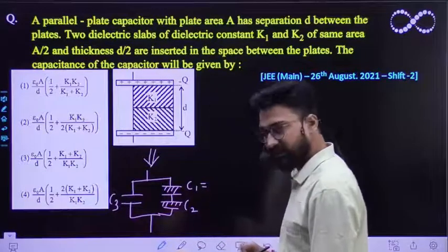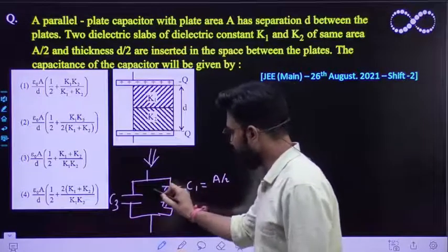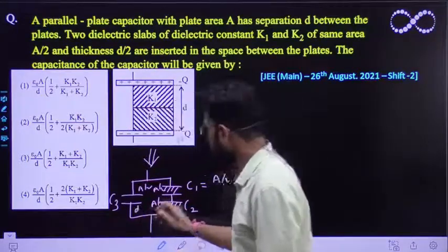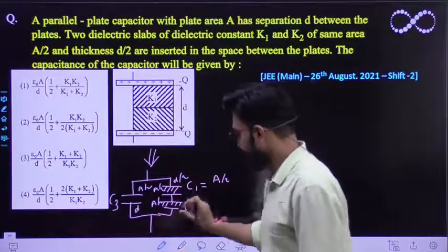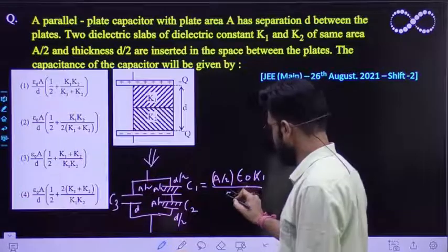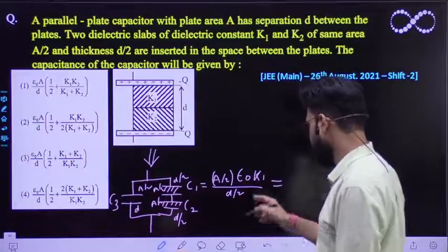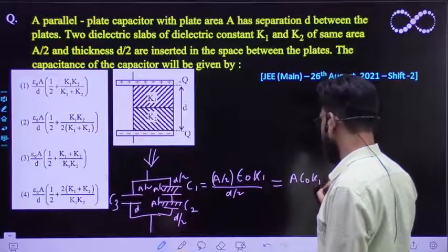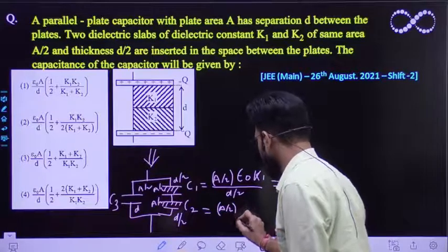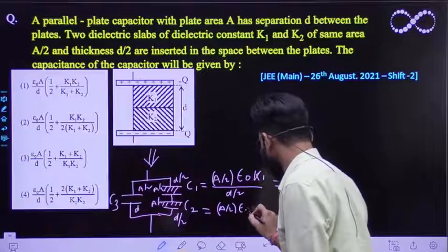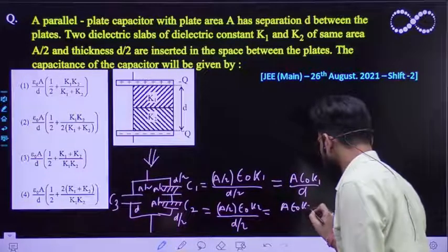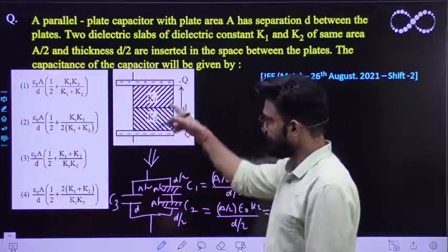So ab dhekho. C1 is nothing but - iska area kitna hai? A by 2. Iska bhi area A by 2, iska bhi area A by 2. Iska separation kitna hai? D. Iska separation D by 2, iska separation D by 2. To C1 kitna hooga? A epsilon not K1 divided by D which is D by 2. So again half se half cancel ho jayega. You will be getting as A epsilon nought K2 divided by D. This is the capacitance of these two capacitors. And what about C3?